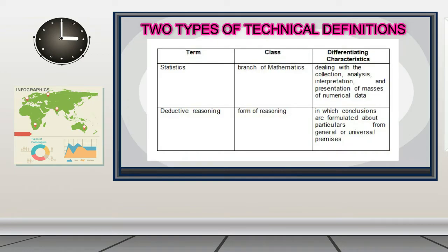Take a look at the table on the board. We have three columns: under the first column, we have 'term'; on the second column, 'class'; on the third column, 'characteristics.' The first word we tried to define is 'statistics.' Under class, we have 'branch of mathematics.' Under characteristics, we have 'dealing with the collection, analysis, interpretation, and presentation of masses of numerical data.'